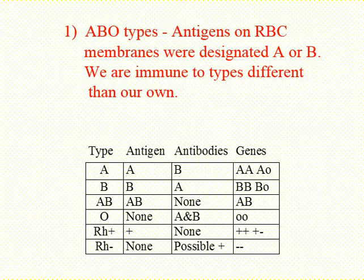Going back to Punnett Squares — if a woman had type A blood and was heterozygous (AO, dominant and recessive), and she married a man with type B blood who also had the recessive gene (BO), their possible offspring would be AB, B, A, and O — so they could have all four possible blood types as children.